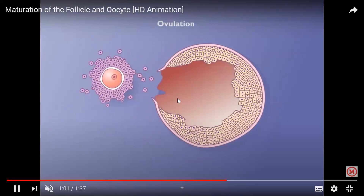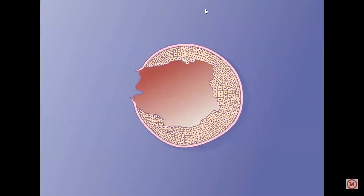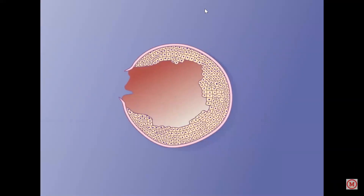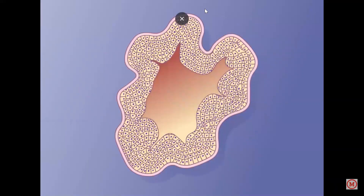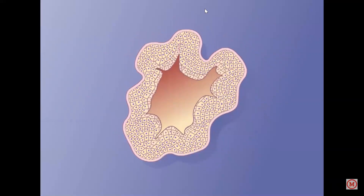The Graafian follicle bursts and releases the secondary oocyte surrounded by the corona radiata. The remaining structure becomes the corpus luteum, which stays steady.